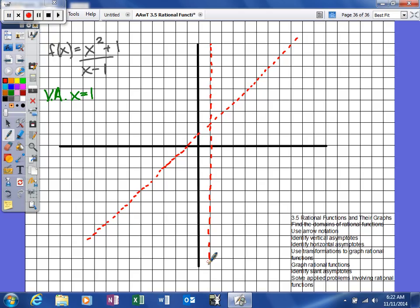And again, because we have one vertical asymptote, it's going to divide our graph into two parts. Basically the part that's to the left of the vertical asymptote and the part that's to the right of the vertical asymptote. So we're going to have to try some numbers in both those sections to figure out what we're going to get.